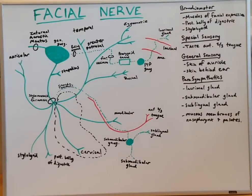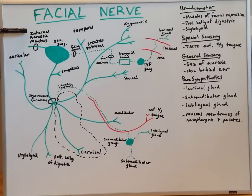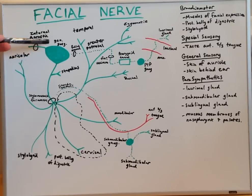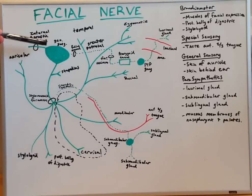Looking at this next diagram, we can see that the facial nerve does get very complex, but we'll go through it one step at a time. The facial nerve emerges from the internal acoustic meatus, then forms a ganglion — a collection of cell bodies — called the geniculate ganglion.